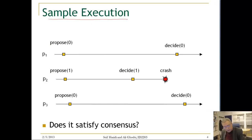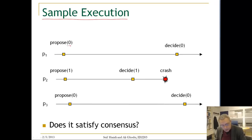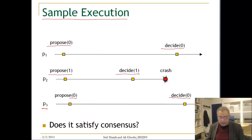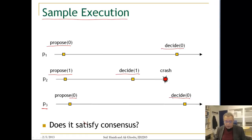Let's look at a sample execution. P1 proposes 0 and decides 0. P2 proposes 1, decides on 1, and then crashes — so P2 is a faulty process. P3 proposes 0 and decides on 0. Termination is satisfied, validity is satisfied, integrity is satisfied. For agreement, since P2 crashed it is not a correct node, so all correct nodes decided the same value — yes, we satisfy consensus in this case.